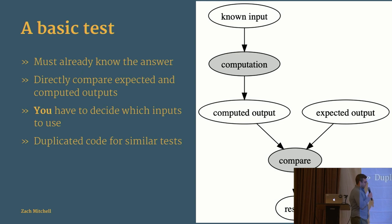This is what the flow of a basic test looks like. You have some known input that you supplied, you run it through some computation—that's the code under test—you compute the output and you compare that to the expected output. From there you say yay it worked or boo it didn't work.